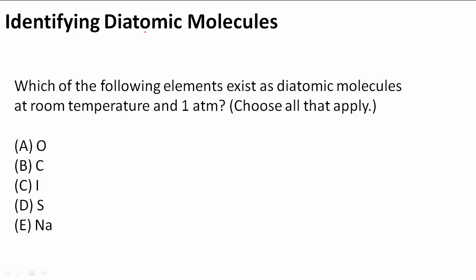Identifying diatomic molecules. In this practice problem, it says which of the following elements exist as diatomic molecules at room temperature and one atmosphere — a form of pressure. Choose all that apply. We have five elements here, A, B, C, D, and E, and we have to figure out which of those elements is diatomic.